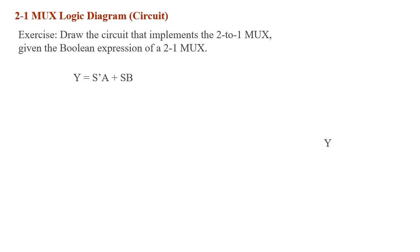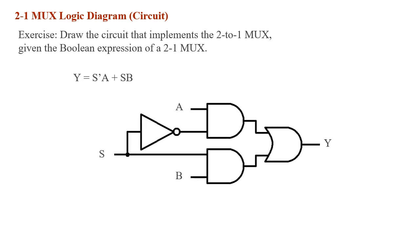Given the boolean expression from the previous slide, we draw the circuit schematic for a 2-to-1 mux. From the expression we can tell that we need one inverter, two AND gates, and one OR gate to implement the 2-to-1 mux. This logic diagram is the circuit we need to implement a 2-to-1 mux.